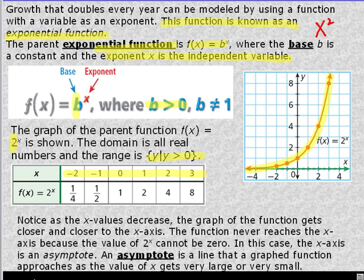As the x values decrease, the graph of the function gets closer and closer to the x-axis. The function never reaches the x-axis, because the value of 2^x cannot be 0. In this case, the x-axis is an asymptote.